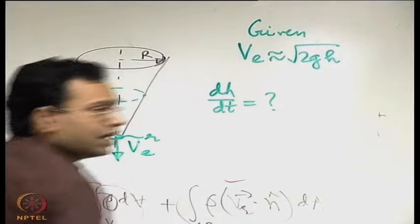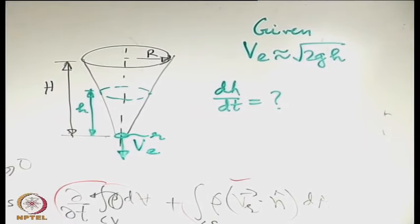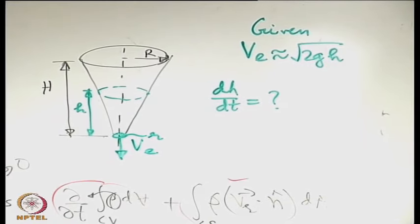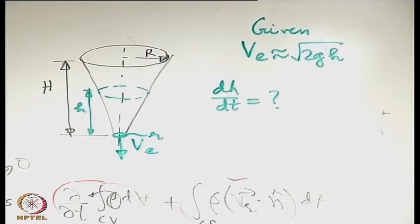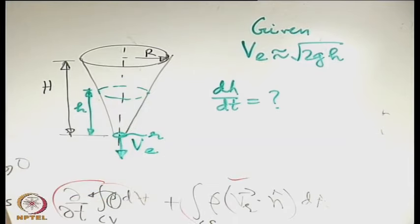It is given that ve may be approximated by the square root of 2g times small h. We discussed earlier that this is not exactly correct but gives an approximate result under certain simplified assumptions, as discussed when we covered Bernoulli's equation. This problem is fundamentally not very different from the previous ones except that the geometry gives a variable cross-sectional area. Let us apply conservation of mass.